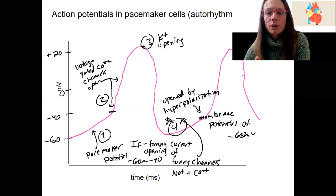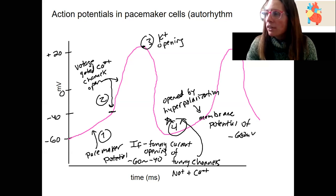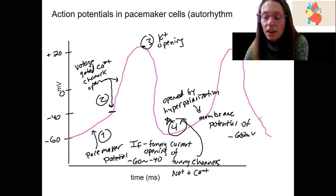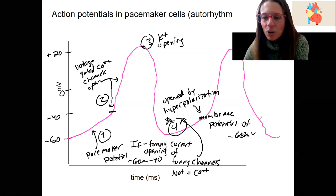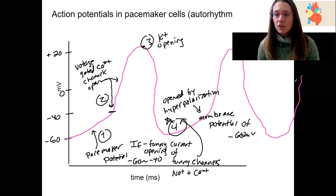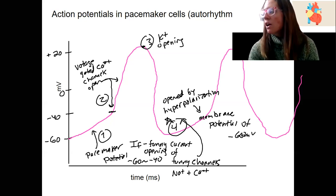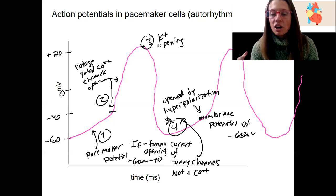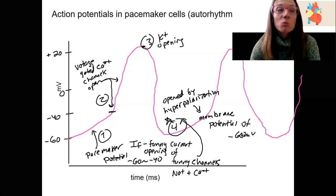Sodium and potassium channels open, then back down. So we are repolarizing the cell due to potassium outflux — repolarizing, repolarizing — we hit minus 60, the sodium funny channels open, and open enough that we're starting to boom up. So it's spontaneous over and over again — a constant cycle. Really pretty cool.